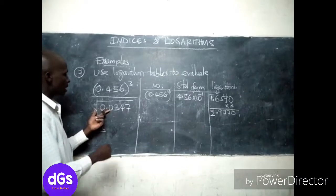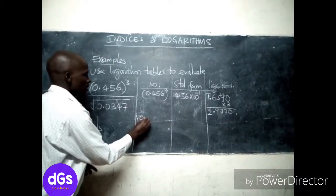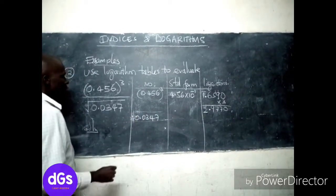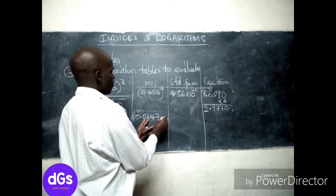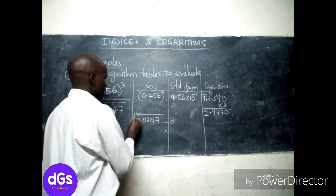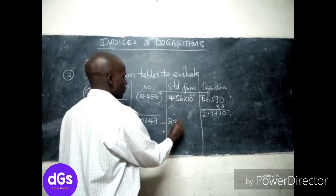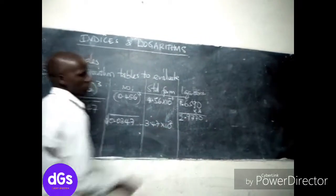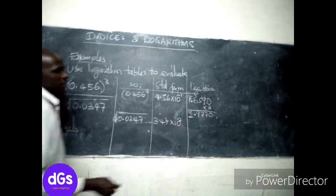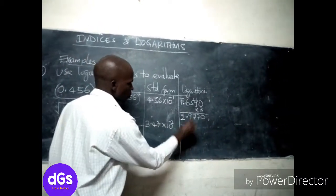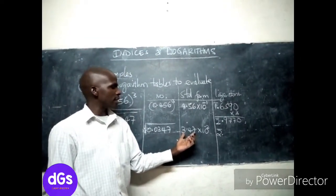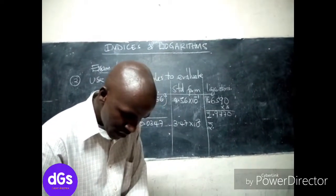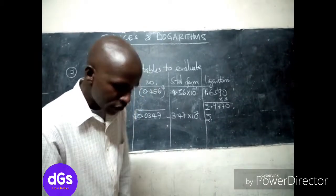The other number is 0.0347. We need to get its standard form, which is 3.47 times 10 to the power of negative 2. This gives us a bar 2 characteristic. From the logarithm tables, log of 3.47 is 0.5403.